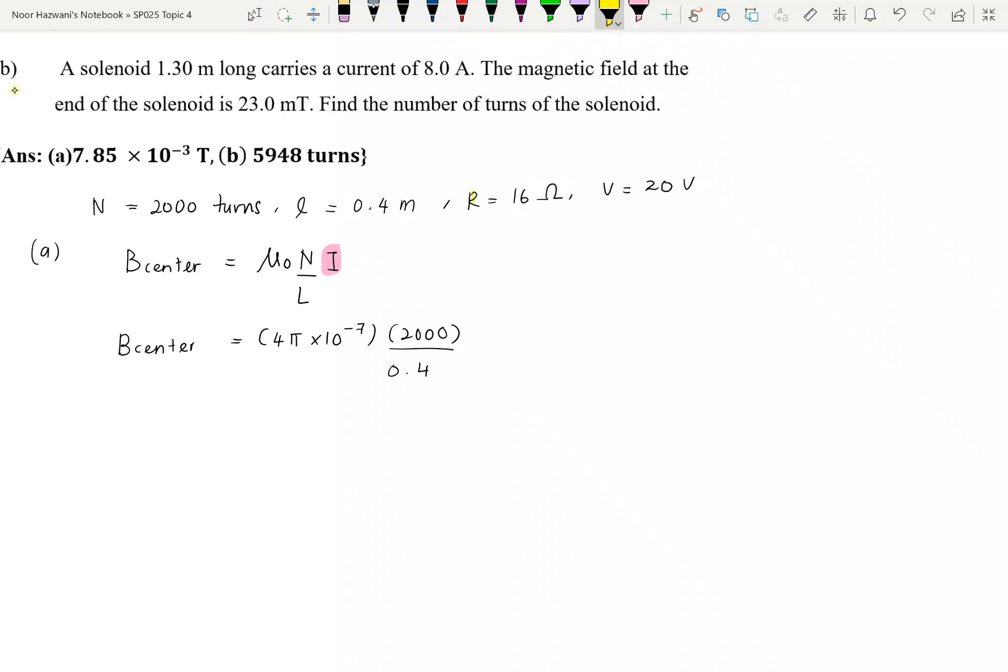Since the question give us the value for R here and also voltage here, therefore you could find the value of current from the Ohm's law equation. So V equals to IR. So you have the value for voltage which is 20. I, you don't know. Then you just leave it. Plug in the value for resistance and then rearrange the equation. Then you will find the value for the current is 1.25.